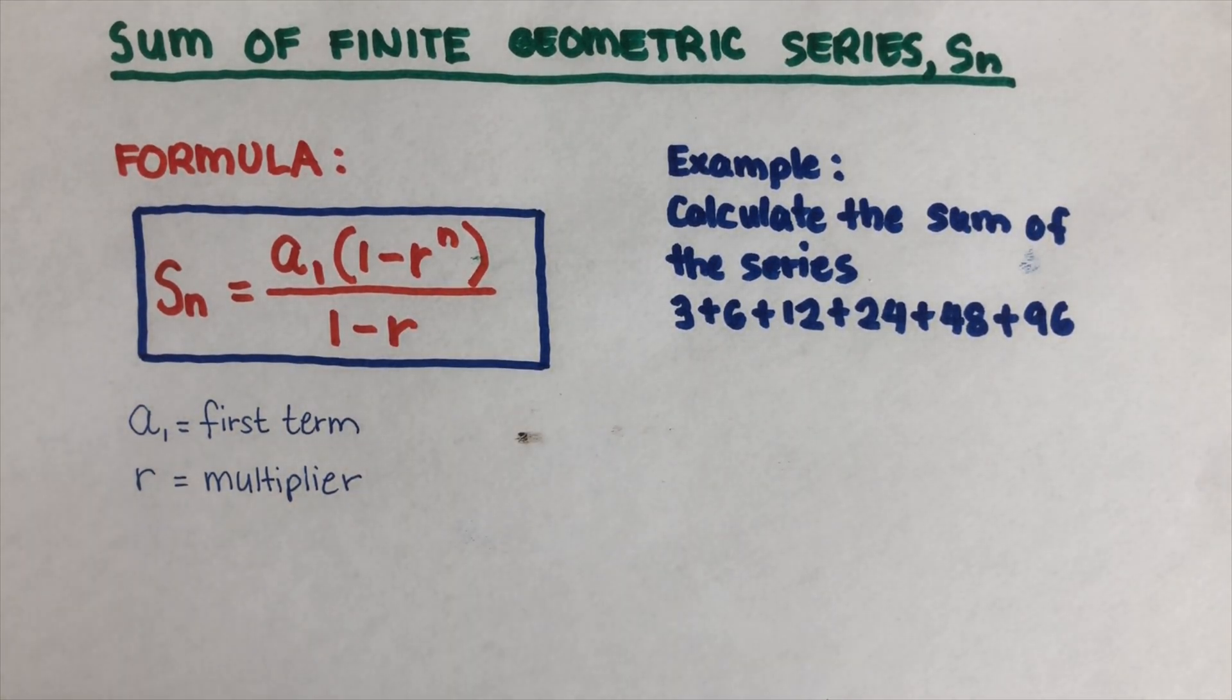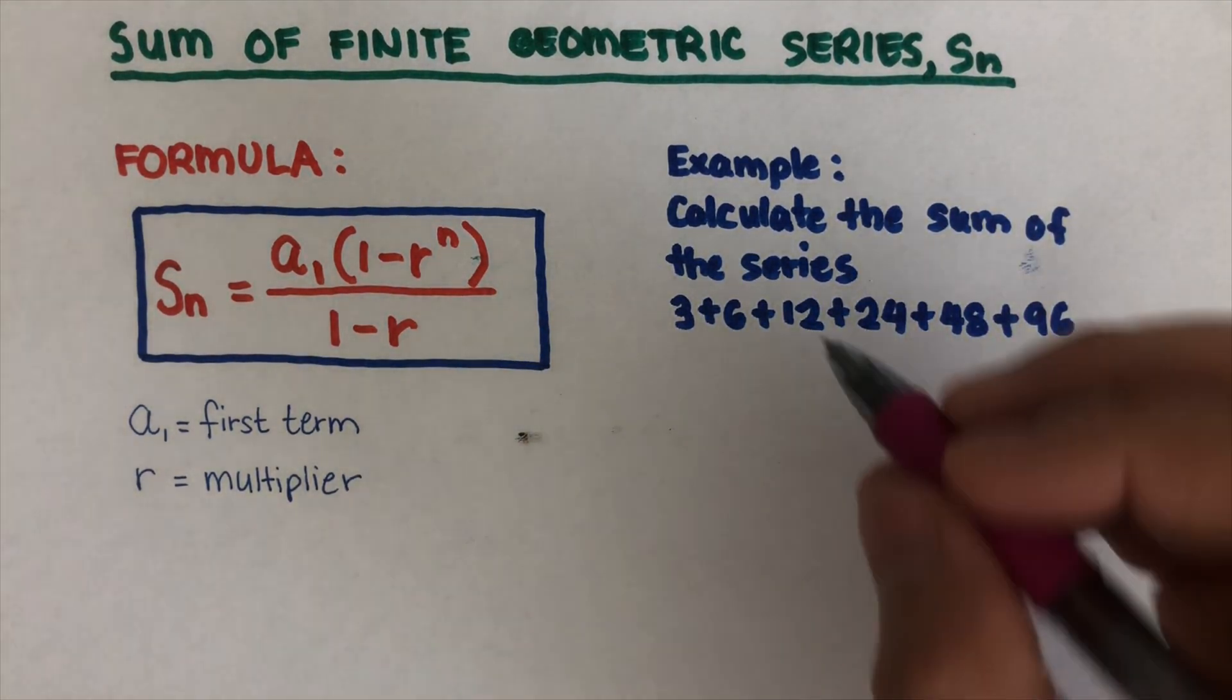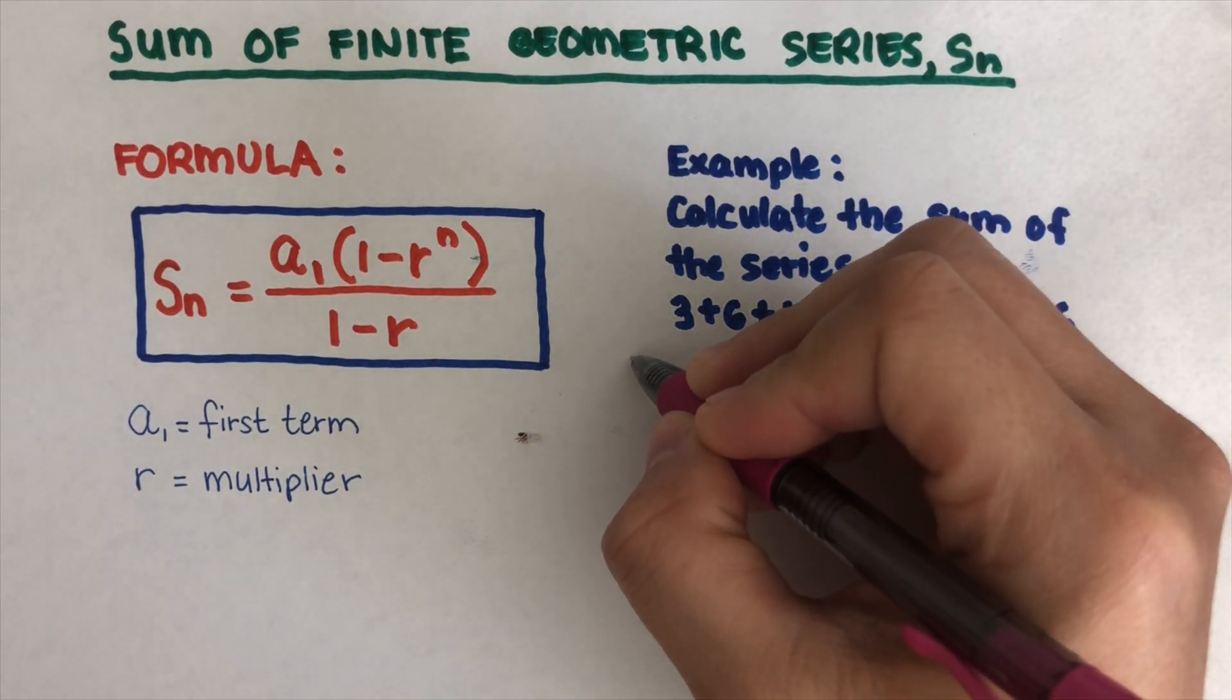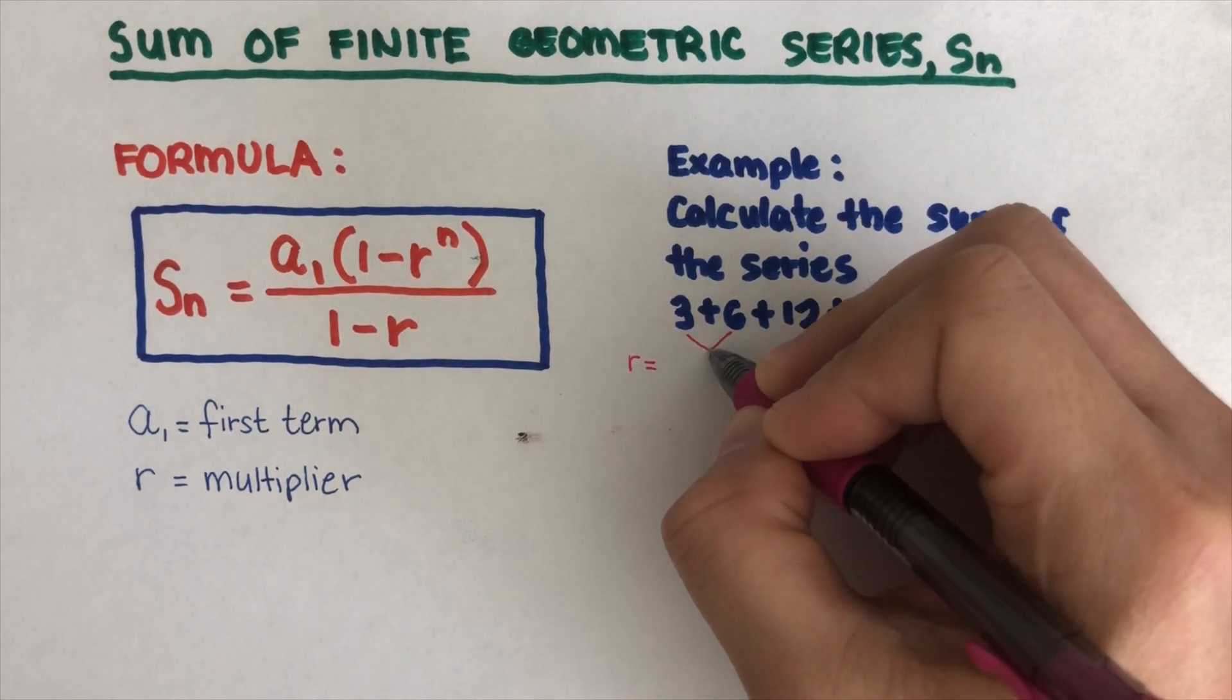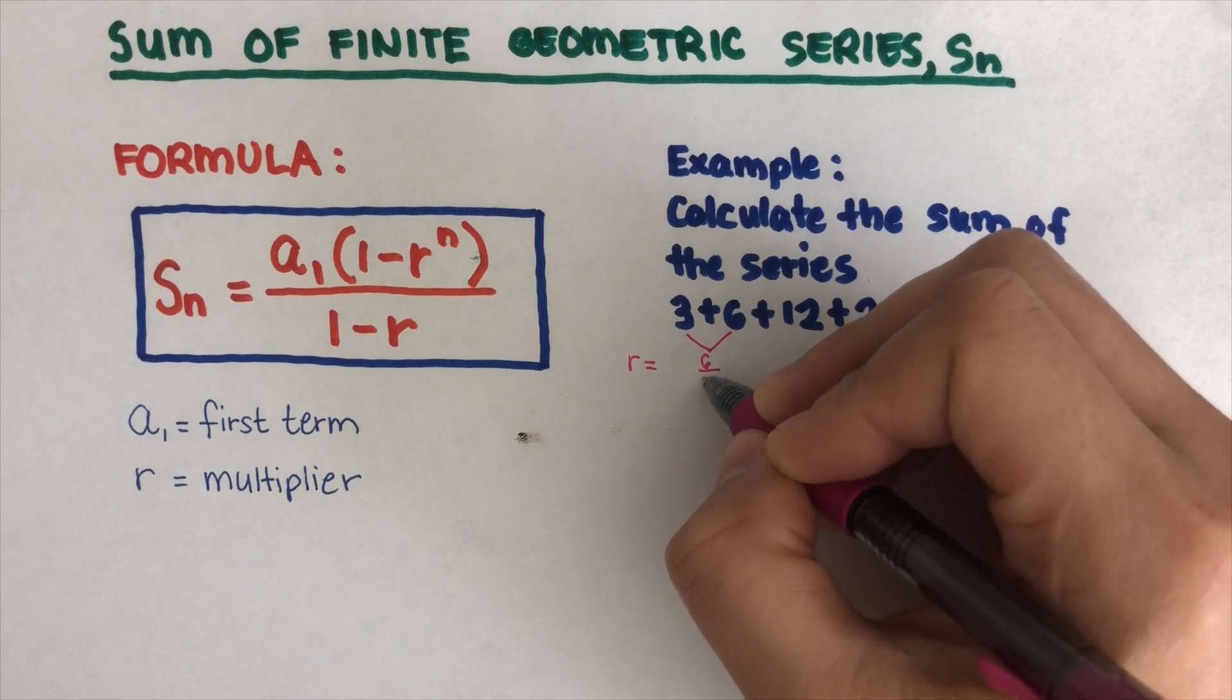I already talked about this in the first video on how to write a formula for geometric series. Feel free to look at that video. I will put the link in the description box below. So to find the r, we are going to divide the second term divided by the first term.